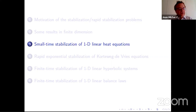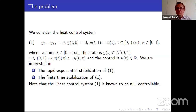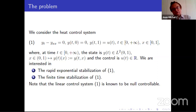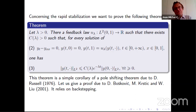Now we move to PDEs and try to do something about stabilization in finite time or rapid stabilization. We consider the heat equation y_t minus y_{xx} equals 0 on the interval [0,1] with control on the right. It is known that the system is exactly null controllable. We look for rapid exponential stabilization and then finite time stabilization. The first theorem is: for any lambda, there is a feedback u_lambda, which is linear, such that for the closed loop system you have the exponential decay inequality.